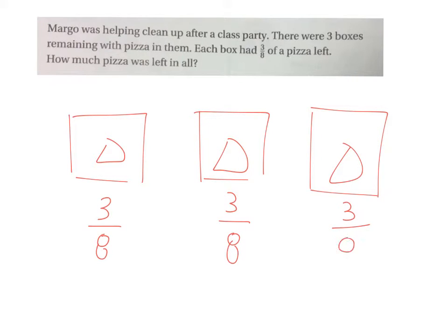And we know that each box had three-eighths of a pizza left. What is the question asking us to find? Thomas? Alright, how much pizza was left in all? Now, we know we could add these three-eighths plus three-eighths plus three-eighths and find the answer, right? But we also know that multiplication is the same as repeated addition. Do we have repeated addition here? Yeah, because we're adding the same number over and over again.